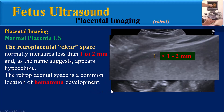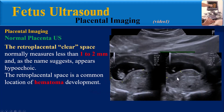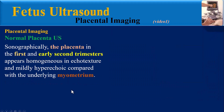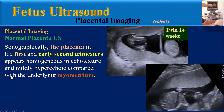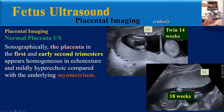The retroplacental space is a common location of hematoma development. Sonographically, the placenta in the first and early second trimester appears homogenous in echo texture and mildly hyperechoic compared with the underlying myometrium. We can see in this image the placenta in a twin pregnancy at 14 weeks gestation, which is hyperechoic compared with myometrium, and also at 18 weeks gestation it also appears hyperechoic compared with myometrium.